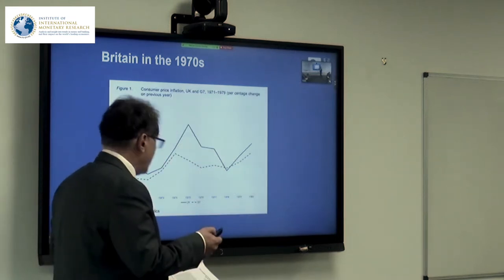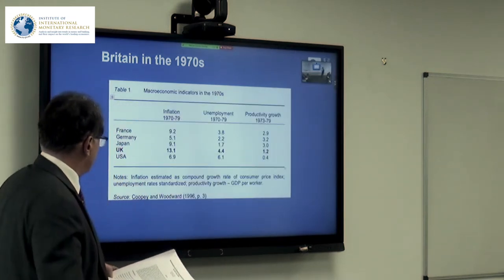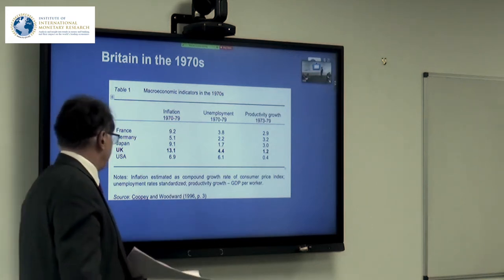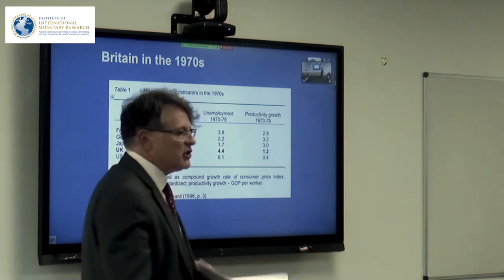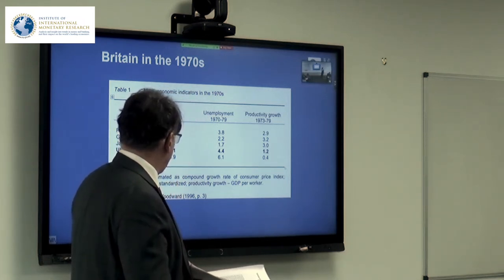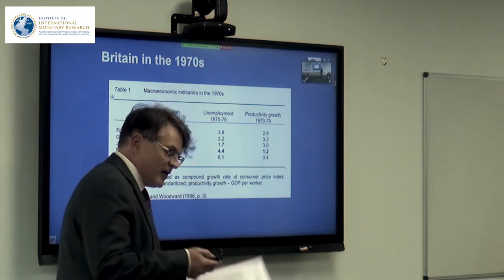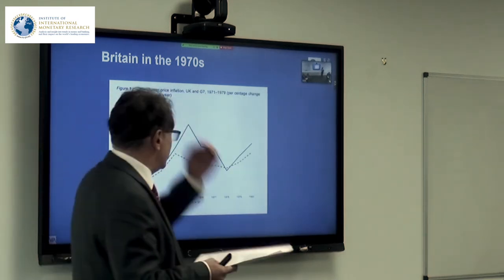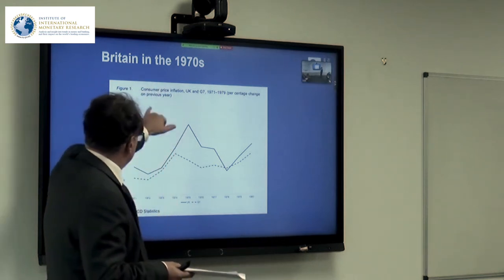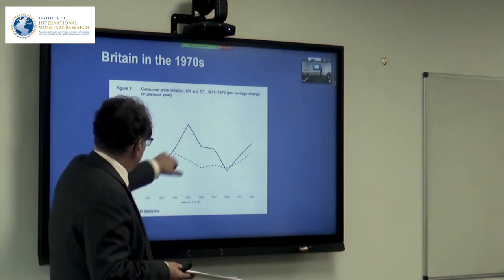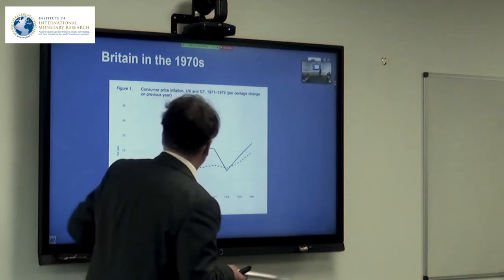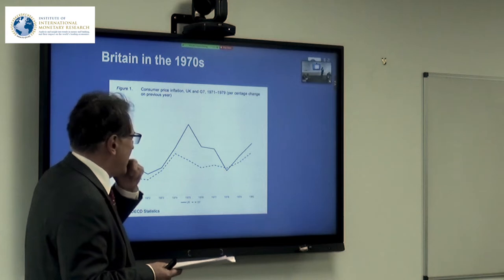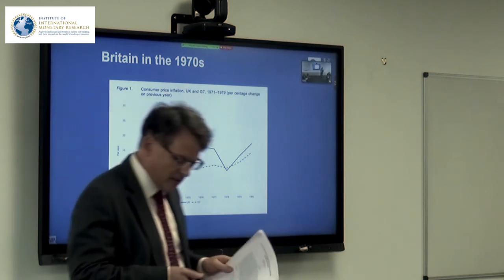The inflation performance highlighted in bold: 13.1%, as opposed to Germany's 5.1%. Unemployment in the 70s was 4.4%, productivity growth 1.2%, only slightly above the USA at 0.4%. Looking at consumer price inflation, using standardised OECD CPI statistics, the UK is the dark line — you can see a peak in the mid-70s, as opposed to the G7 dashed line. So the UK had an inflation problem amongst many things.